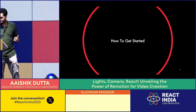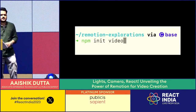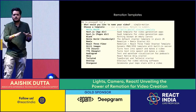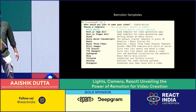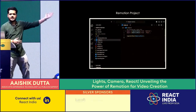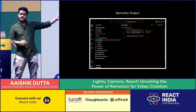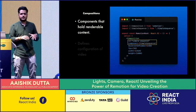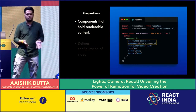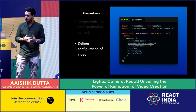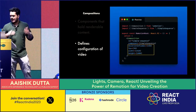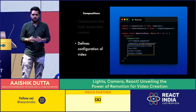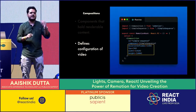Getting started is really easy — just run npm init video in your terminal and you get an initialized Remotion project with some templates. A Remotion project is just a React project at its heart, and its entry point is a Remotion Root which lets you define all your compositions. Compositions hold all the renderable components — you pass the component reference and define video configuration: height, width, FPS (like 30 or 60), and duration in frames. For example, a 30 FPS video at 150 frames gives you a 5-second video.